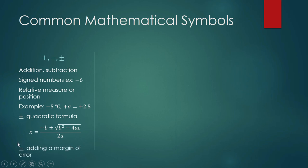Plus or minus also means adding a margin of error. Sometimes you will see something like this—this is the symbol for average or the sample mean. So the sample mean is, let's say for example, 65 millimeters plus or minus 3 millimeters. That means the average measurement is not exactly 65 millimeters, it's somewhere between 62 millimeters and 68 millimeters.